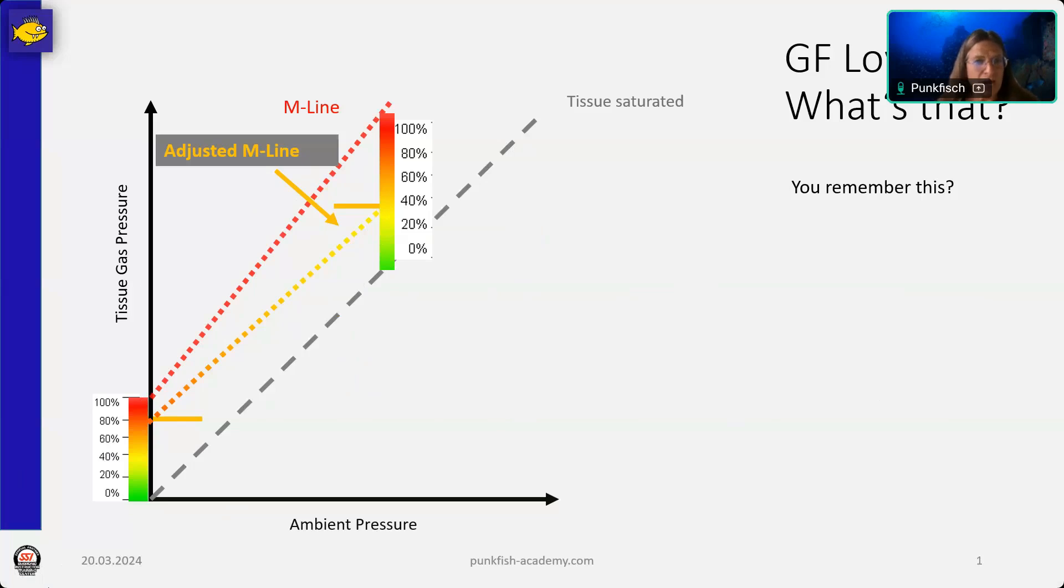We've seen that with gradient factor high, we can be pretty sure that when we come out of the water with a lower gradient factor high, when we never reached a very high supersaturation throughout the dive, we come out of the water pretty safe. But we cannot say something similar about gradient factor low. Why? Let's see.